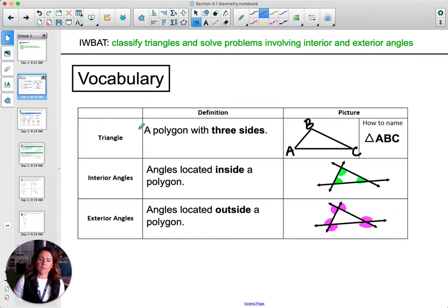So just a couple quick vocab terms here. A triangle, obviously a polygon with three sides. A triangle has three sides, hence tri. You label the triangle's vertices with capital letters because they're points. So you've got vertex A, vertex B, vertex C, all labeled with capital letters.